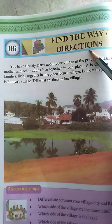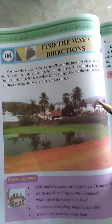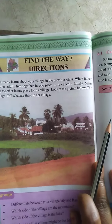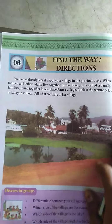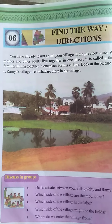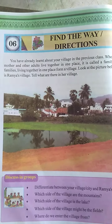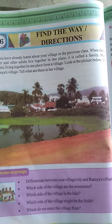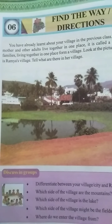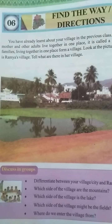So all these things we saw in the previous lesson. Now today we are going to learn the lesson Find the Way - Directions, Lesson number 6, Page number 16. In this lesson, what are we going to learn? We are going to learn about directions. Directions means which are used to reach us at a particular place. Using directions only we can go to a particular place.